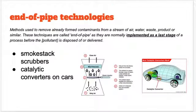Smaller things that can be done is end-of-pipe — it's exactly what it sounds like. You've got a pipe and right at the end of that pipe, as things start coming out, like blowing through a straw, what comes out the other side? If there's smoke coming at the end of a pipe, they put something right at the very end to try to clean it and make sure nothing bad comes out. Smokestack scrubbers and catalytic converters are two examples of things that go at the end of the pipe.